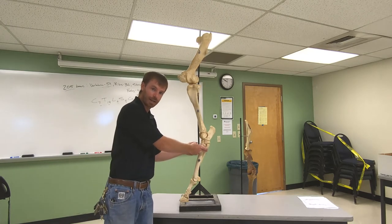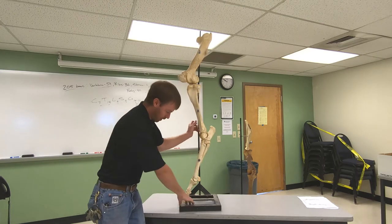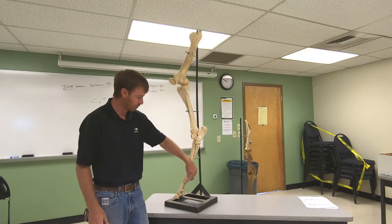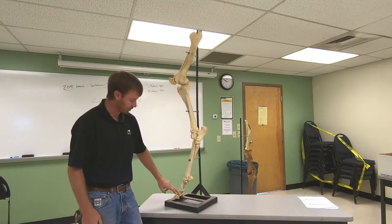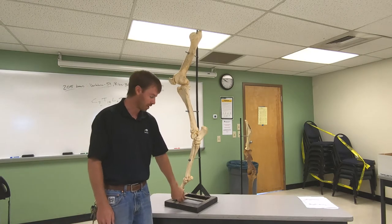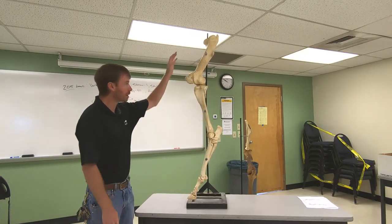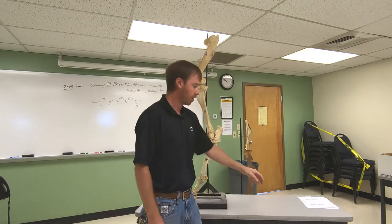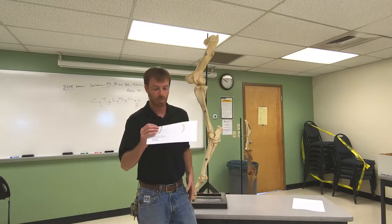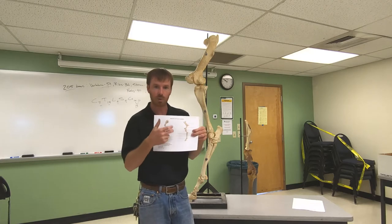The cannon on the hind limb is the third metatarsal, whereas on the forelimb it was the third metacarpal. The splint bones on the back are the second and fourth metatarsals. From here it's exactly the same: proximal sesamoids, long pastern, short pastern, coffin bone, and that tiny one hiding underneath is the distal sesamoid or the navicular bone. Just like the forelimb, you need to be familiar with all of those bones.